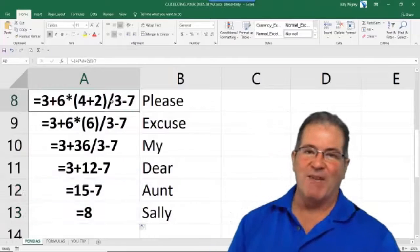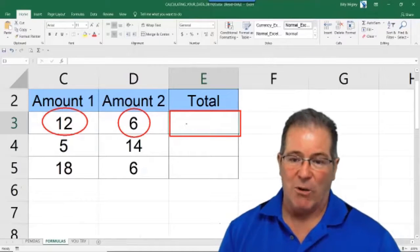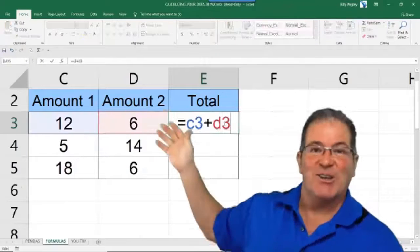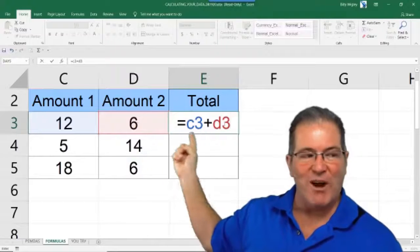Eight, there you have it. The order of operations, 12 plus six. I want the result right here in cell E3. The cells with the references, these are called cell references right here.